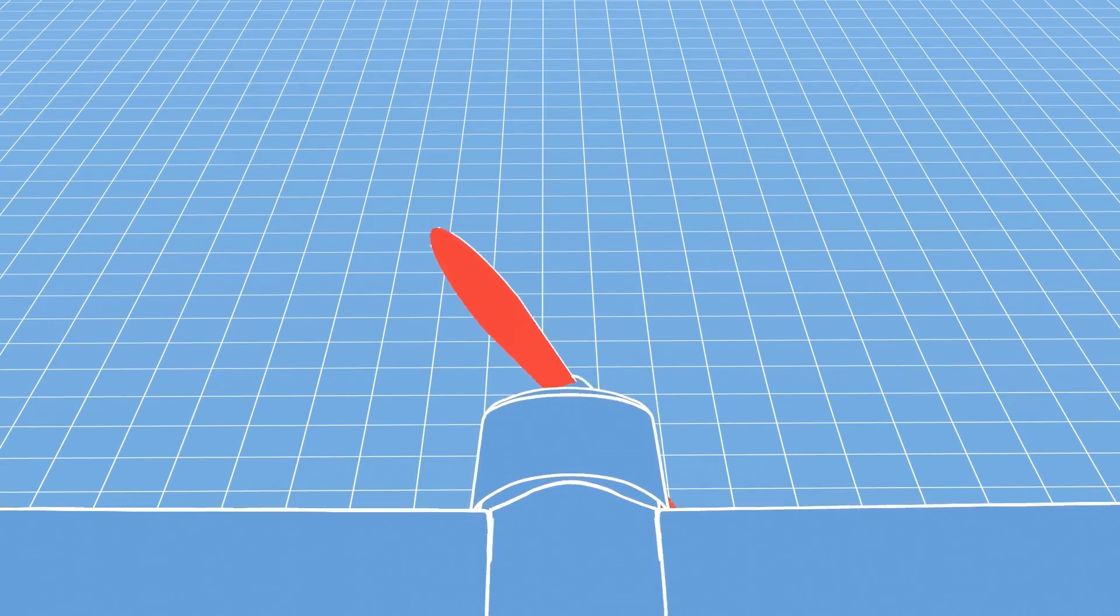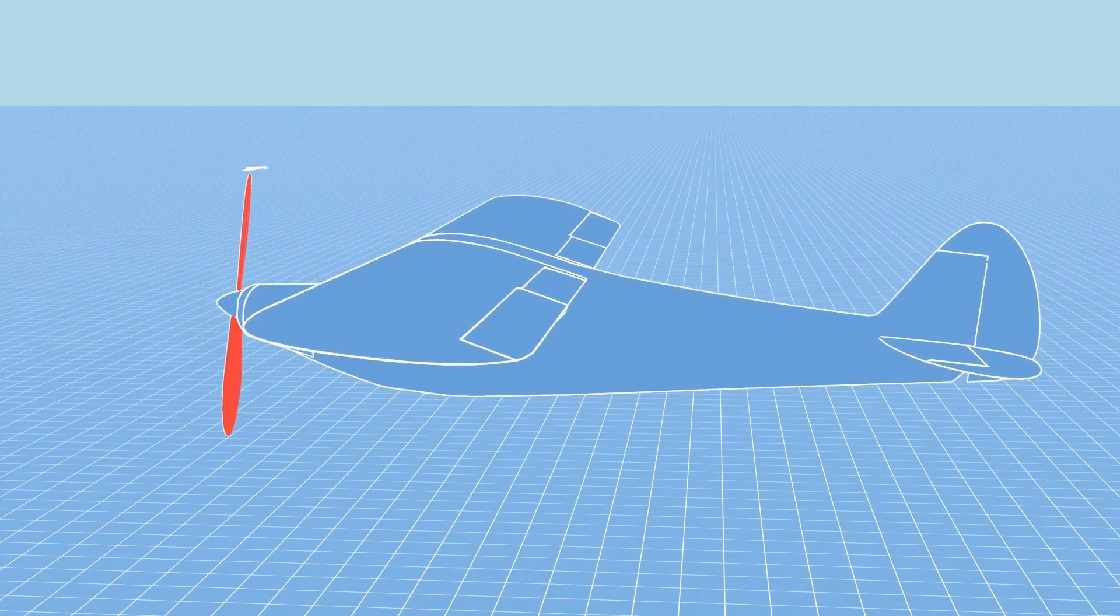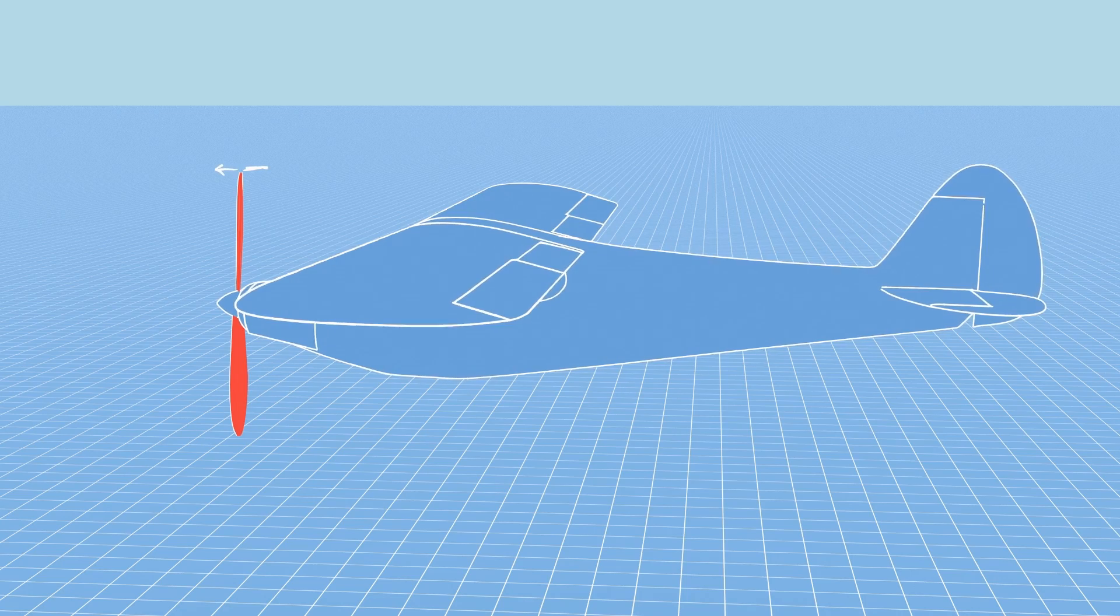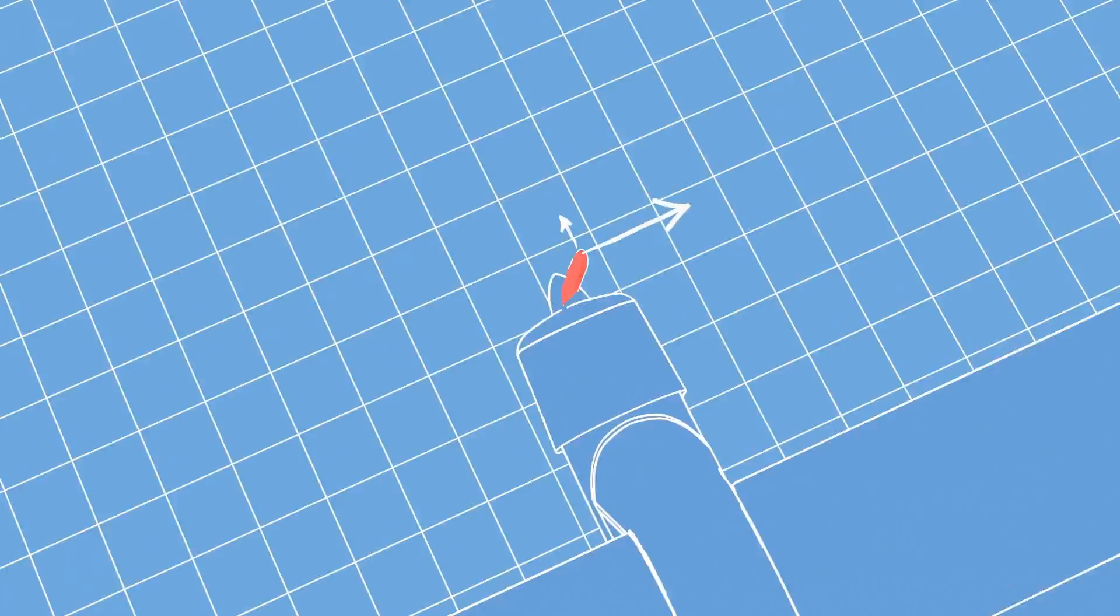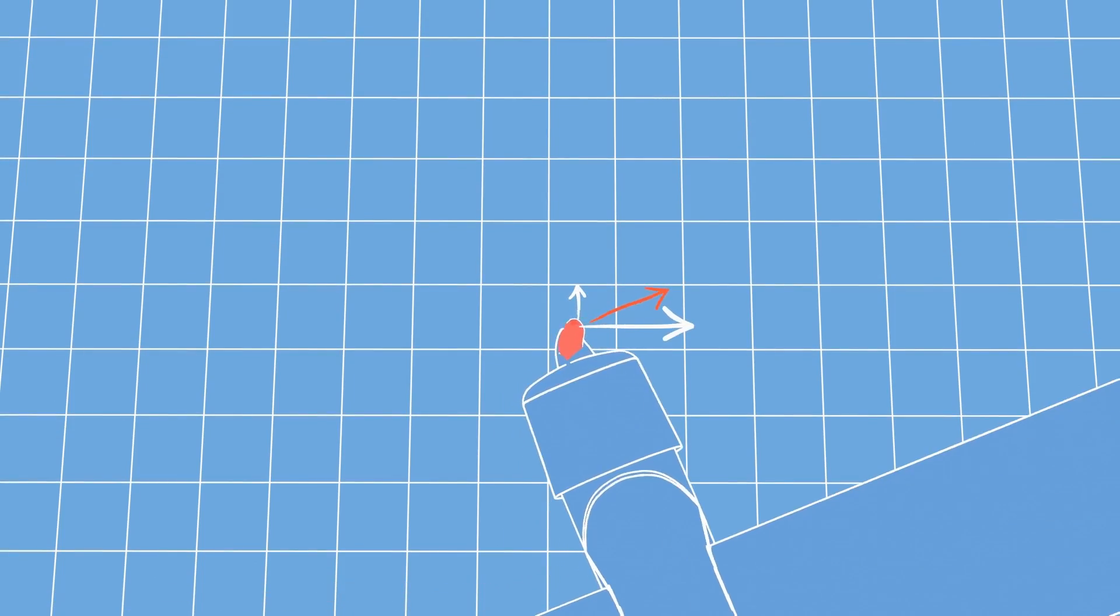The propeller is also prone to gyroscopic precession. The tip of the propeller moves to the right. And when the tail of the airplane lifts up at takeoff for example, the tip of the propeller is pushed forward. If you add these factors together, the tip will move right forward, turning the airplane to the left.